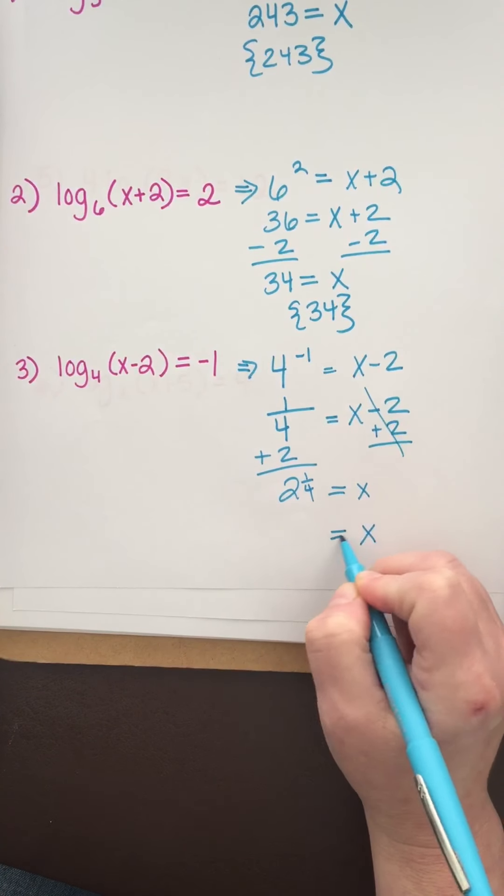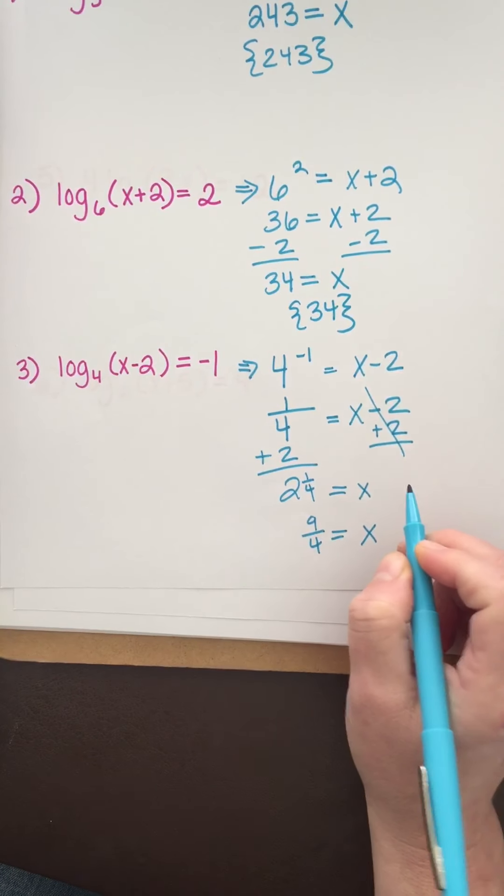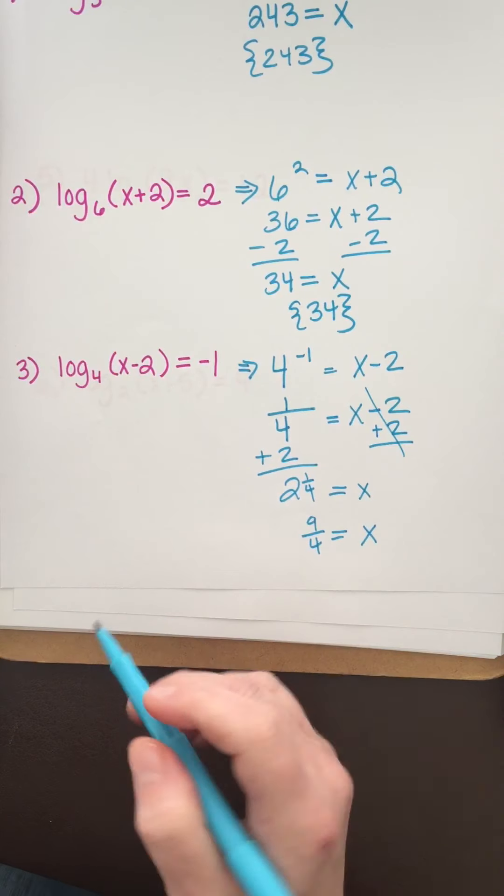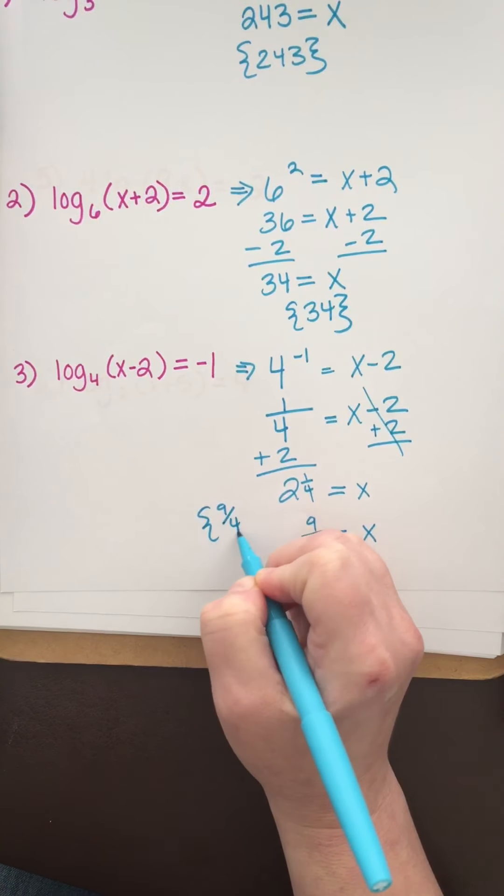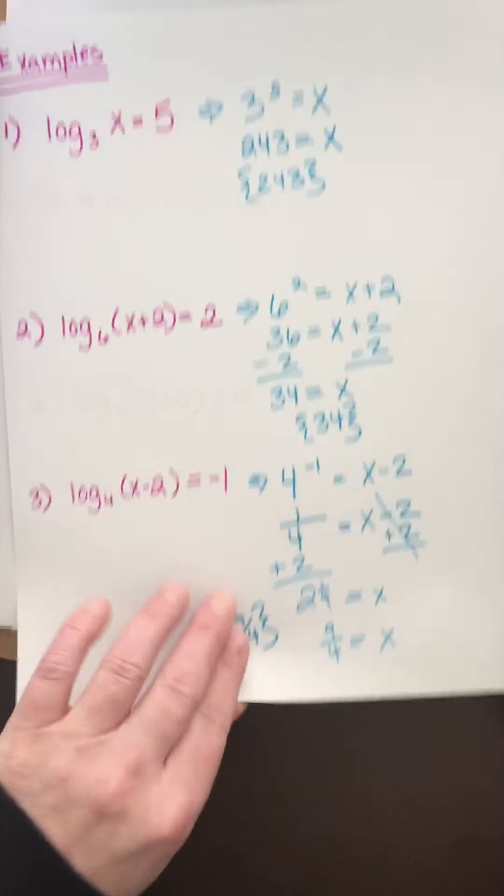We get x equals 2 and 1/4. Converting to an improper fraction, that's 9/4. If I plug that in, 9/4 minus 2 is 1/4, which is positive, so the solution is 9/4.